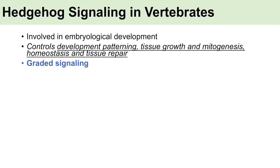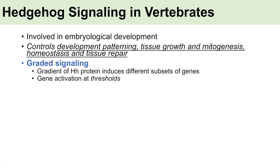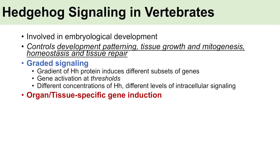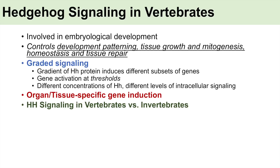We mentioned a couple concepts in the invertebrate hedgehog signaling video. One was graded signaling, meaning different gradients of hedgehog protein induce different subsets of genes — certain genes are activated at certain thresholds of hedgehog protein concentration. The other concept was organ tissue-specific gene induction, meaning hedgehog proteins induce different genes in different organs and tissues, such as arms versus the brain.